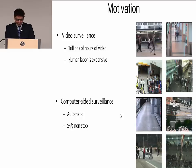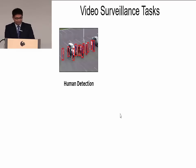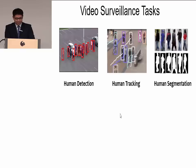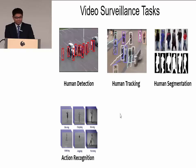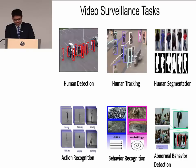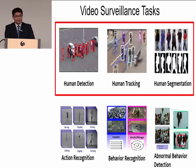Computer vision can do a few video surveillance tasks. For example, human detection, human tracking, human segmentation, action recognition, behavior recognition, and abnormal behavior detection. This dissertation focuses on human detection, tracking, and segmentation.